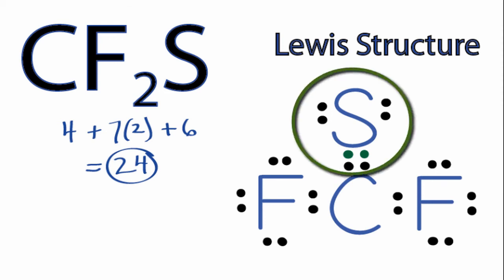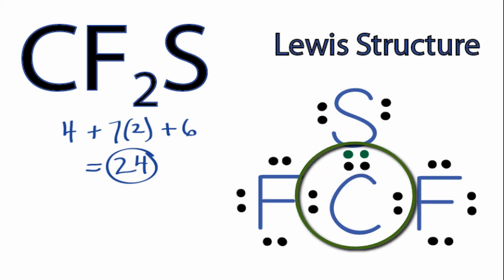But now the sulfur still has 8 valence electrons, and the carbon also has 8 valence electrons, so it has a full outer shell. We've used all 24 valence electrons for the CF2S Lewis structure. Each of the atoms has 8 valence electrons, so we're done. That's the Lewis structure for CF2S.